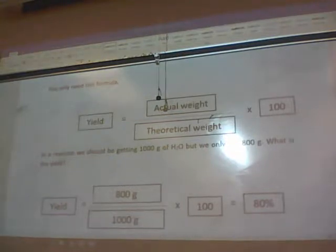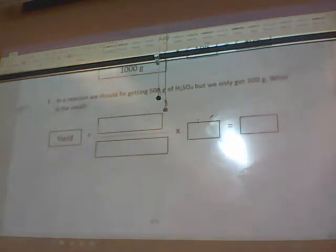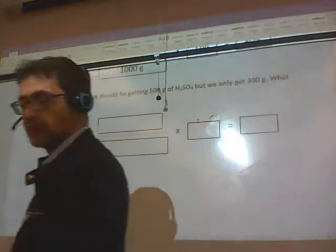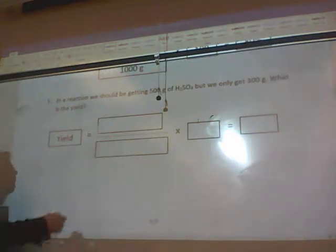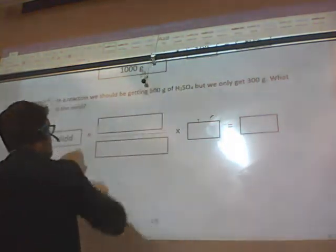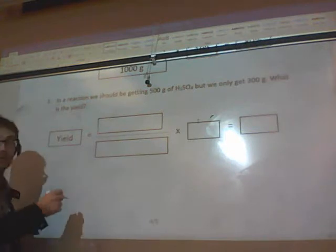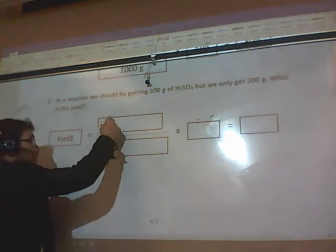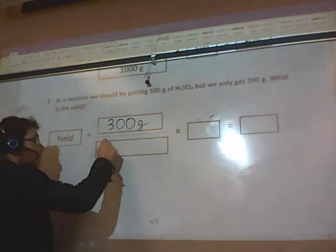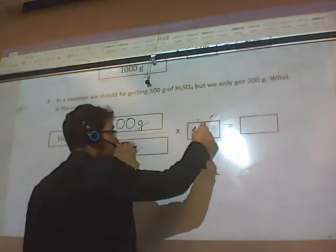Let me do an example. In a reaction you should be getting 500 grams of sulfuric acid but you get only 300. What is the yield? The only thing you've got to do is divide 300 grams by 500 and multiply by a hundred.